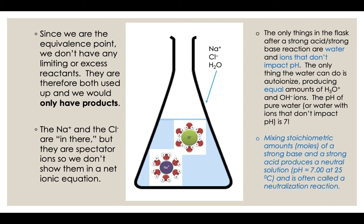The Na+ and the Cl- are in there, but we don't show them in an ionic equation since they're spectators. The only things in the flask after a strong acid, strong base reaction are water and ions that don't impact the pH. The only thing the water can do is auto-ionize, producing equal amounts of H3O+ and OH-. Those sodium ions and chloride ions are not going to mess with the H3O+ or OH- concentrations. When you have those cations or anions of weak acids or weak bases, they can mess with your pH. But the flask we're looking at right now is strong acid, strong base. We make water and the things that don't affect the pH of the water.